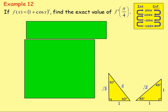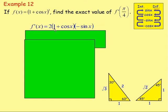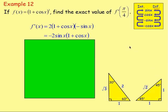Example 12: if f(x) equals (1 plus cos x) squared, find the exact value of f'(π/4). To differentiate this we use the chain rule — we've got brackets. Differentiate outside the brackets: 2 times (1 plus cos x), leave it as it is, down to the power of 1, multiply by the derivative. Differentiating 1 plus cos x: 1 disappears, cos x goes to negative sine x. So f'(x) equals 2(1 + cos x) times negative sine x. Put the negative to the front and sine x to the front: negative 2 sine x times (1 + cos x). Now find the value when x equals π over 4.